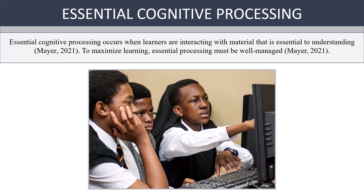Essential cognitive processing occurs when learners interact with material that is essential to understanding. This type of processing helps the learner visualize the material in the working memory and is often a result of the learner being challenged by the material. To maximize learning, essential processing must be well managed.